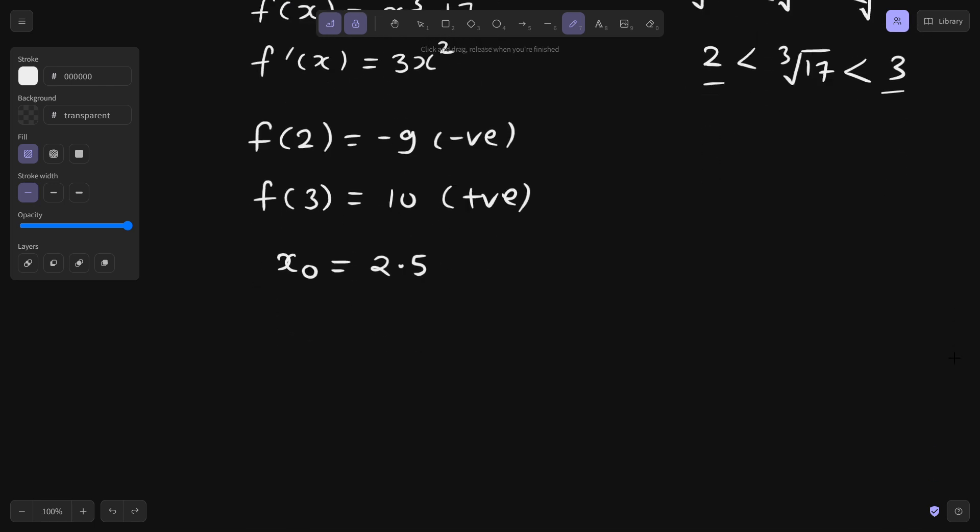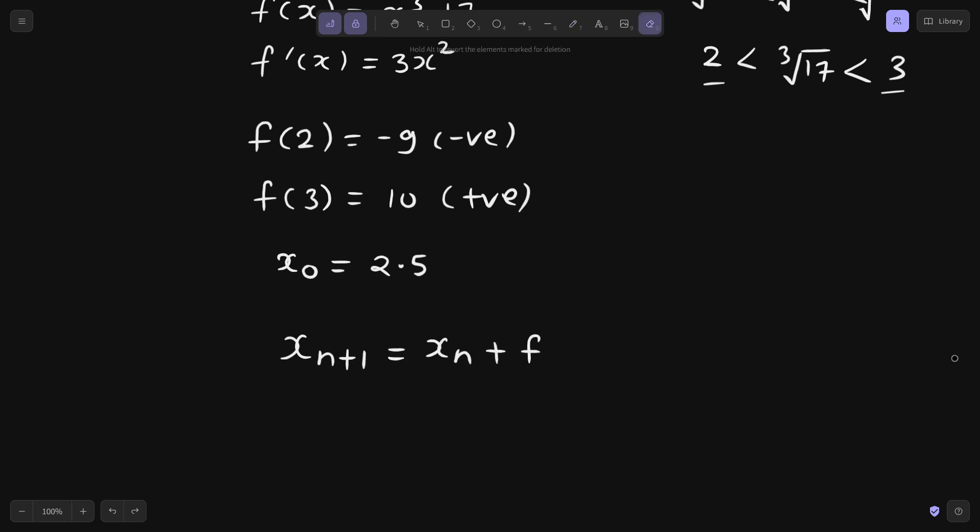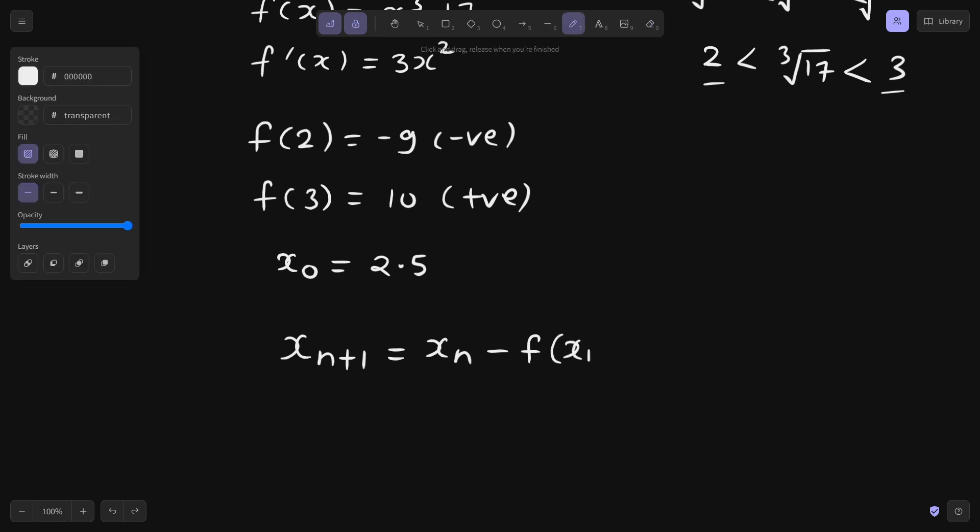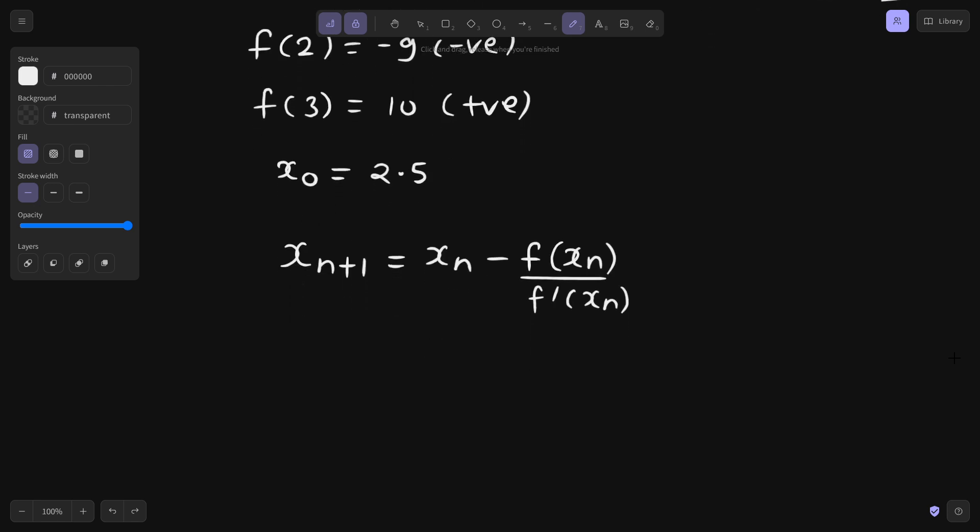What is the iterative formula in case of Newton-Raphson method which we will be using continuously? This is x n plus 1 equals to x n minus value of function at x n divided by value of derivative at x n. There are other derived formula also for cube root but we will be using the standard formula because you don't need to remember much formula in this case. This is the standard formula you can use for any case.